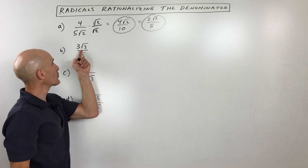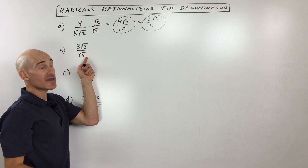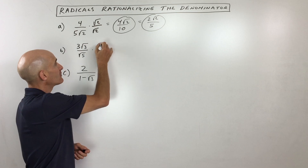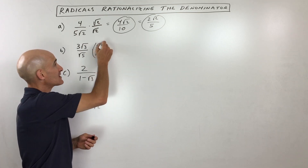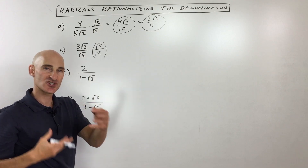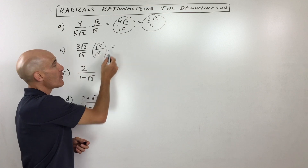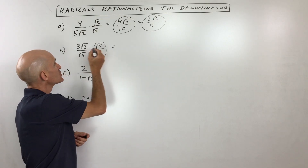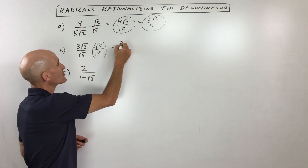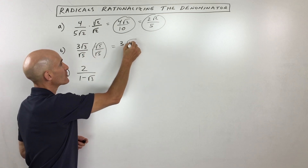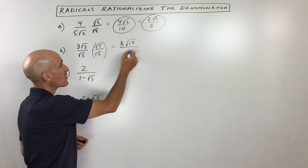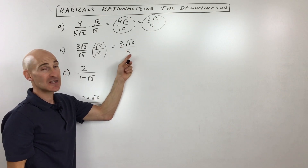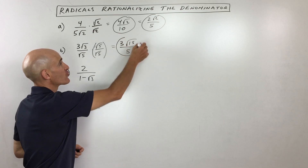Let's look at another example. Here we have three square root of three over square root of five. Again, we don't want that square root in the denominator, so we want to rationalize it. We multiply by square root of five over square root of five. Anything divided by itself is one, so it doesn't change the value of the fraction — it just changes the way it looks; they're equivalent. When you multiply, you multiply numbers times numbers and square roots times square roots. So three times one is three; square root of three times square root of five gives us square root of 15. In the denominator, square root of five times square root of five is square root of 25, which is five. Notice we got rid of the square root in the denominator. We can't reduce any further, so that's it — you've simplified and rationalized that fraction.